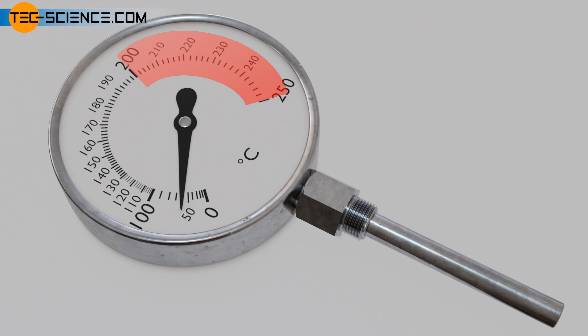Vapor pressure thermometers can be used at very low temperatures, which are only a few Kelvin above absolute zero.